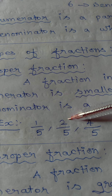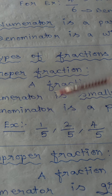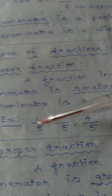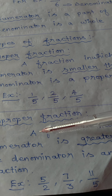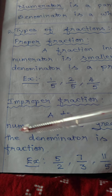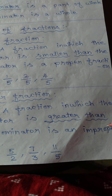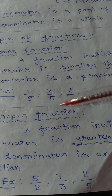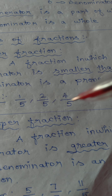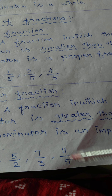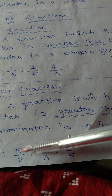Next is the improper fraction. An improper fraction is a fraction in which the numerator is greater than the denominator. For example: 5 by 2, 7 by 2, and 11 by 5 — in each, the numerator is greater than the denominator.